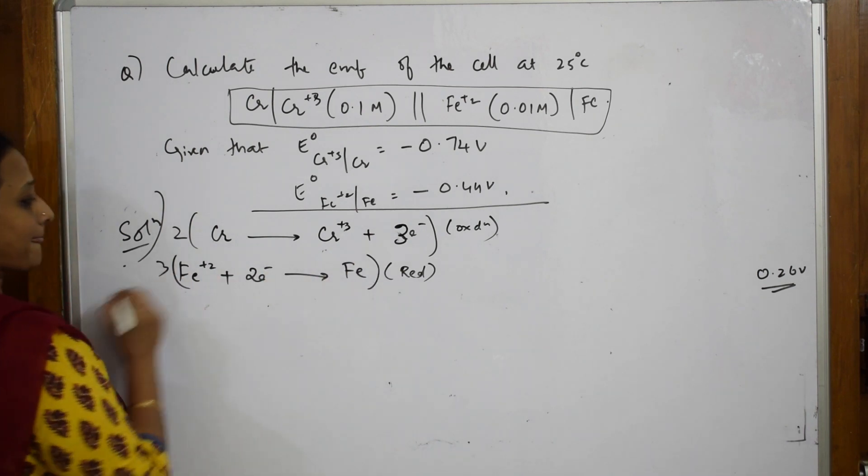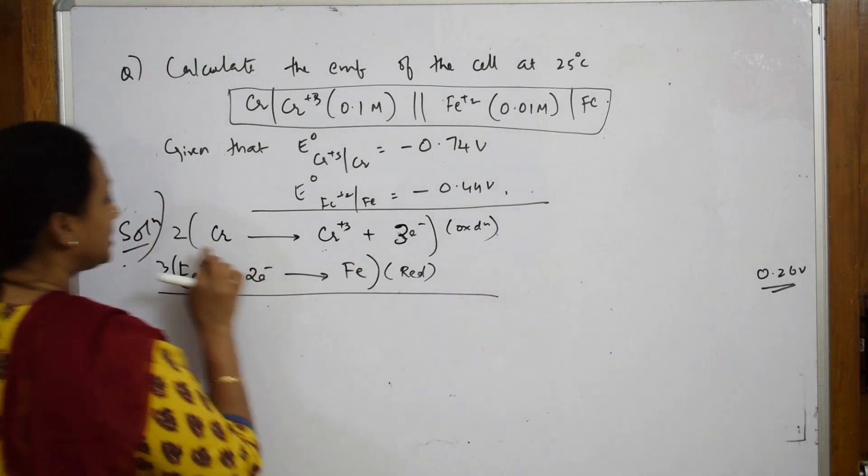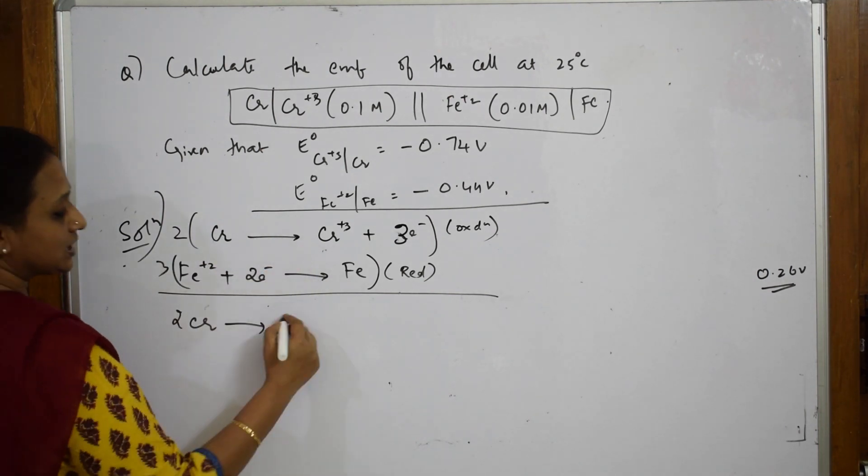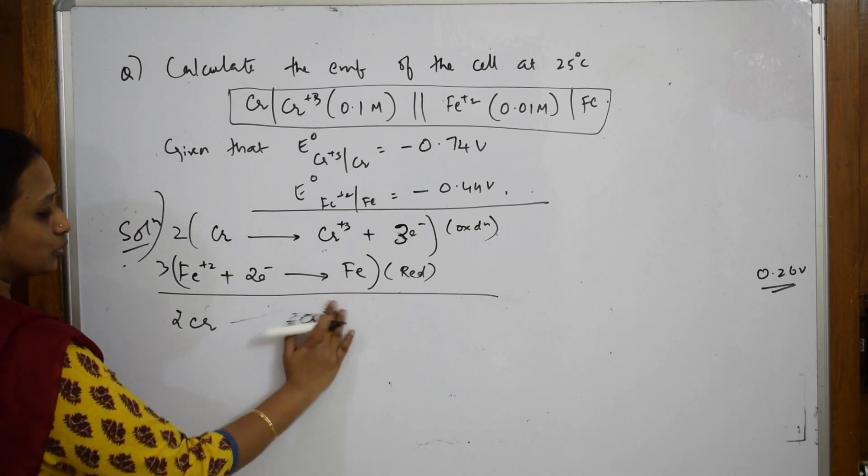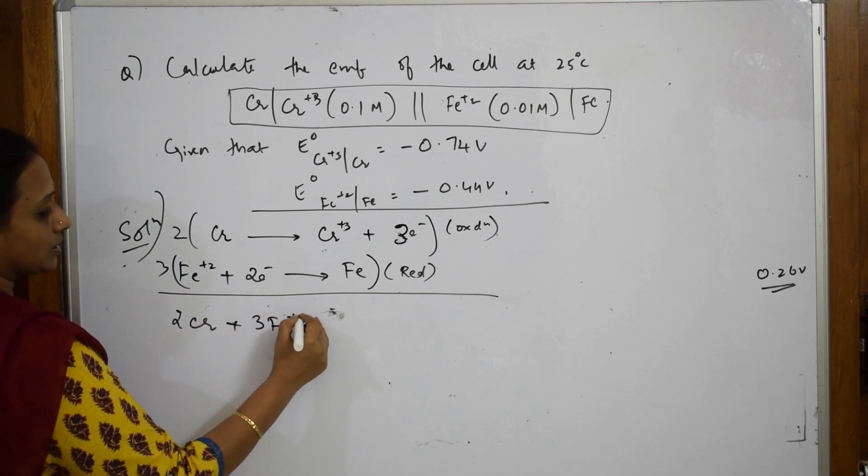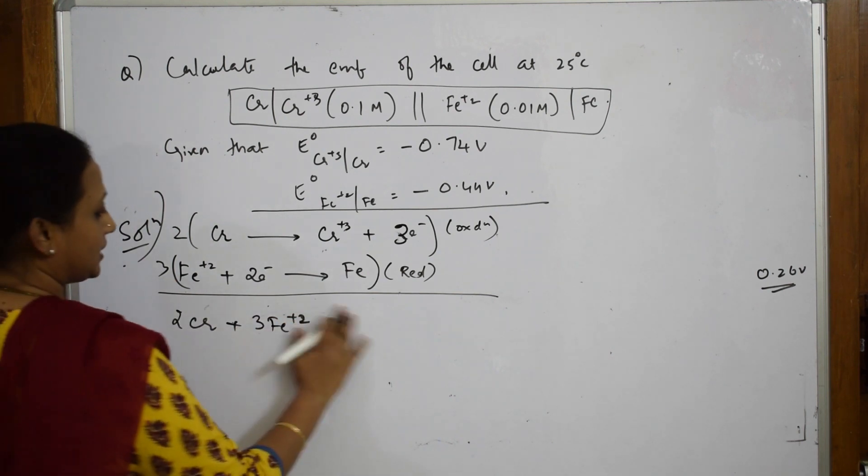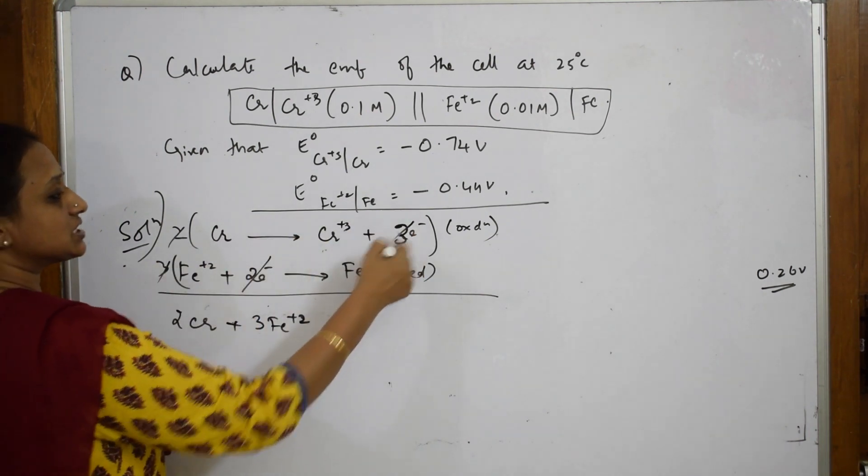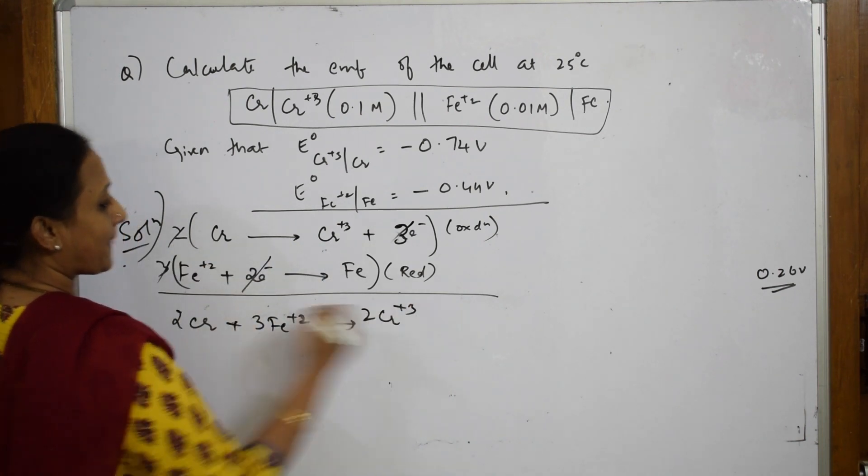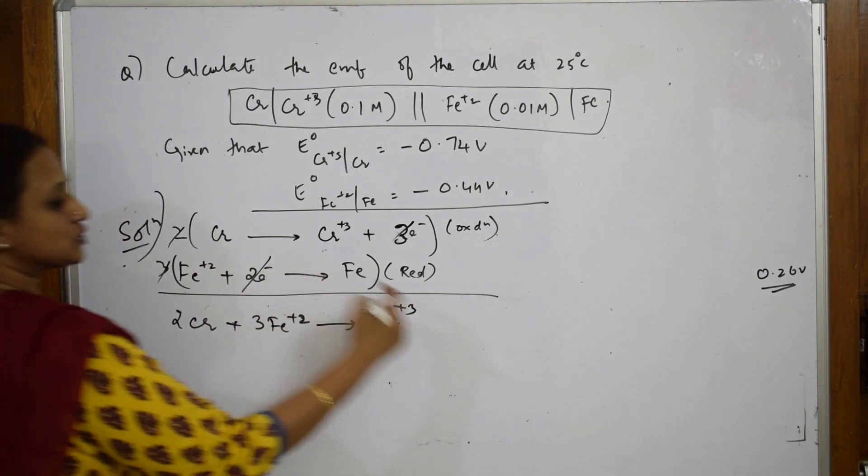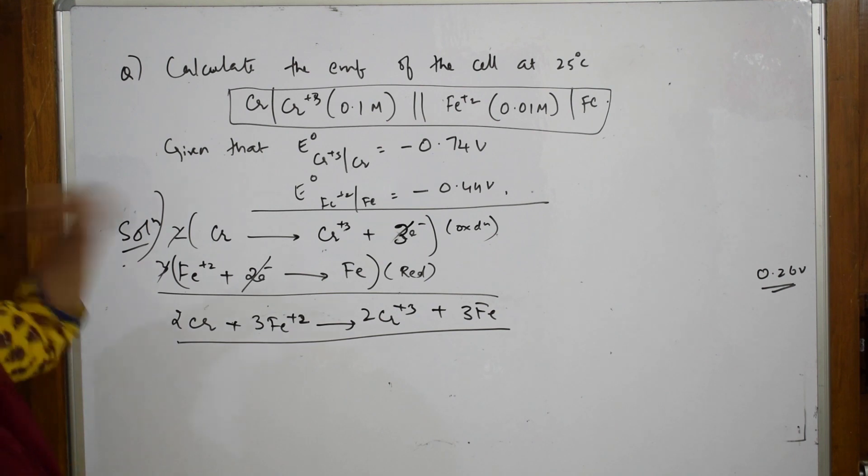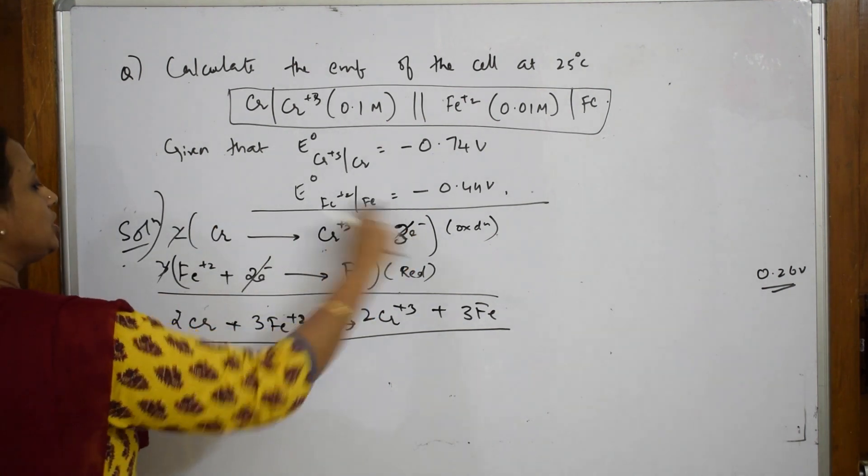The reaction becomes: 2Cr → 2Cr³⁺ + 6e⁻ and 3Fe²⁺ + 6e⁻ → 3Fe. Combining both, this becomes 2Cr + 3Fe²⁺ → 2Cr³⁺ + 3Fe, with 6 electrons canceling out. This is your final reaction.